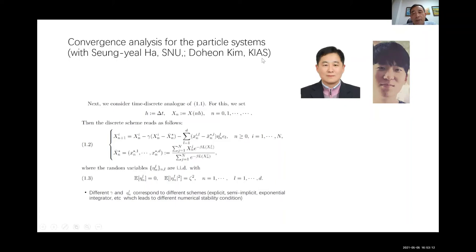That is the work I will discuss next, in joint work with Seung-Yeal Ha at Seoul National University and his former postdoc Doheon Kim. We have a convergence proof for the time-discrete version of this particle system. We use point-wise component-wise Brownian motion noise and time discretization — covering explicit (forward Euler), semi-implicit, and exponential integrator schemes, corresponding to different parameter choices of gamma and eta.